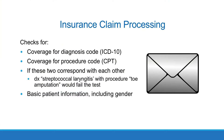Insurance claim processing. When a provider's office sends a bill to an insurer, an automated claim processing program checks to see if the plan excludes coverage for each diagnosis code (ICD-10), the plan excludes coverage for each procedure code (CPT), the submitted diagnosis and procedure codes correspond with each other, and the submitted diagnosis and procedure codes correspond with basic patient information including the gender marker on file. For example, a diagnosis of streptococcal laryngitis with a procedure code for toe amputation would fail the test.